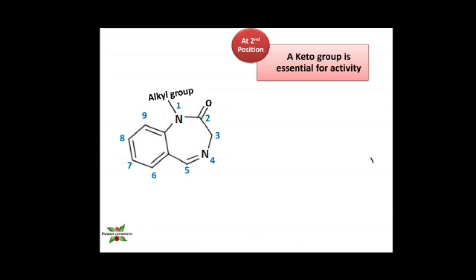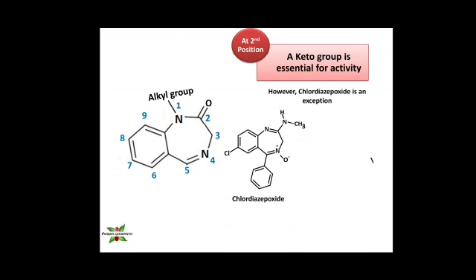At position two, a keto group is essential for activity. It is essential for the binding of the drug to the receptor. An exception is chlordiazepoxide, which does not have a keto group at position two. However, in the body, when it undergoes metabolism through oxidative deamination, it is converted to demoxepam, which does have a keto group at position two. So the keto group at position two is ultimately essential for activity.